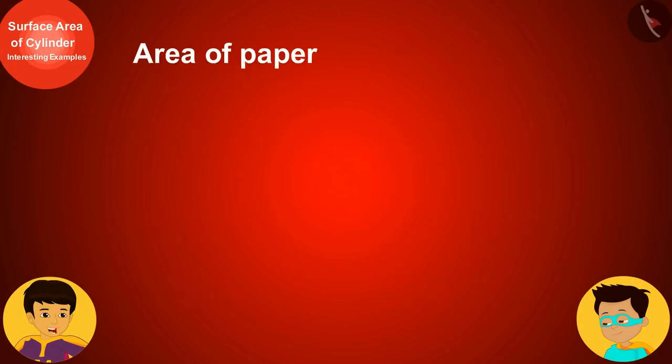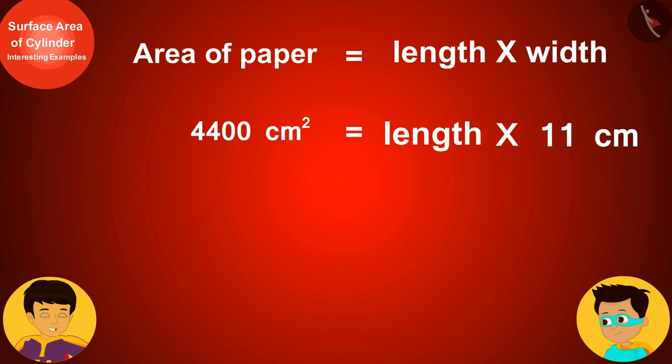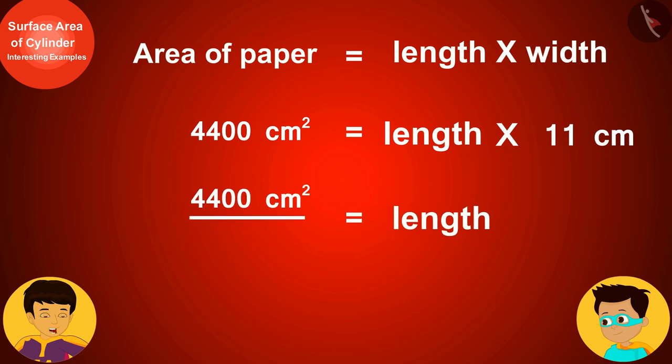Well, it means if the width of our paper is 11 centimeters and the area is 4400 square centimeters, then the length of the paper will be 4400 divided by 11, that is 400 centimeters.